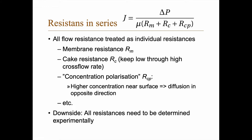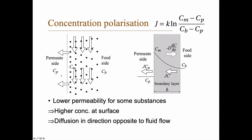The problem with concentration polarization is that larger molecules don't pass through the membrane, so there is a build-up of concentration near the surface. This creates diffusion in the opposite direction that we need to counteract. There may also be other resistances, and the downside of this model is that we need to determine all resistances experimentally. Here is a figure showing cross-flow with permeate passing through the membrane — the black circles represent particles.